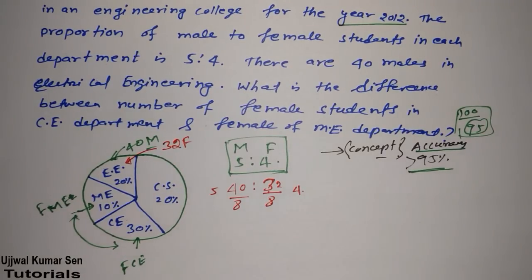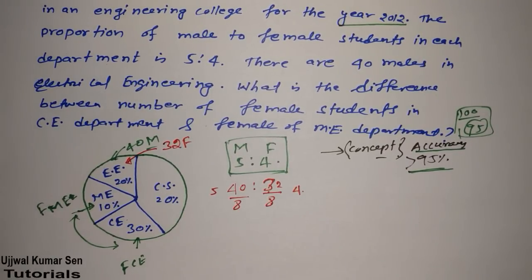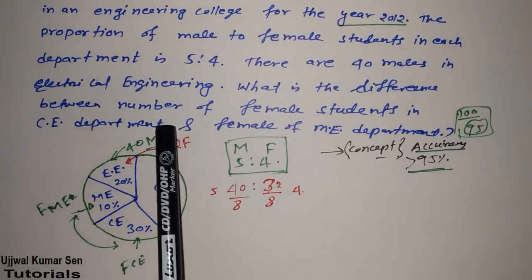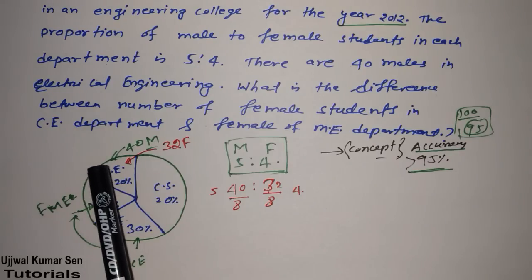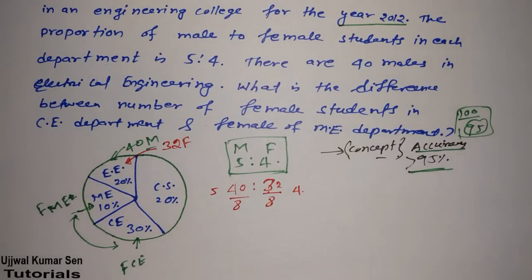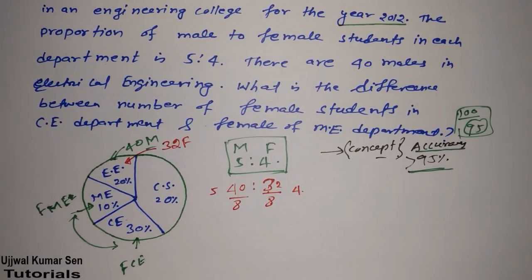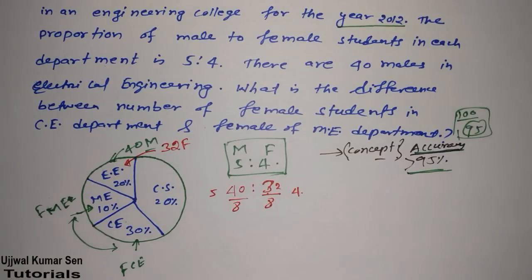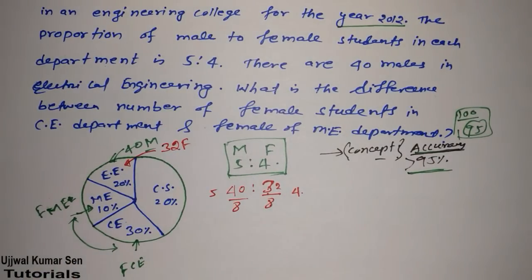If you have followed along and found the total number of female students in electrical engineering, your job is more than 70 percent done. However, 20 to 30 percent of students make mistakes here because they are in a hurry. Don't be in a hurry — focus and maintain accuracy. So we have 40 males and 32 females, and electrical engineering is 20 percent, giving 72 total students.